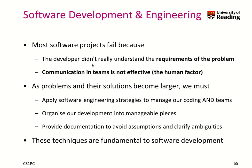Software projects often fail because developers don't understand the requirements of the problem, and secondly because communication in teams is not effective — a psychological and human factor. As problems and solutions become larger, we must apply engineering strategies and manage our coding effectively, including managing the teams that work together. We have to organize development into smaller pieces and provide documentation to avoid false assumptions and clarify ambiguities. These techniques are fundamental to software development, and you will learn about this in another module.